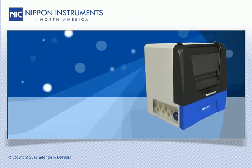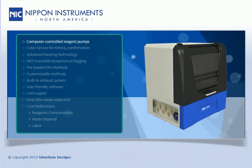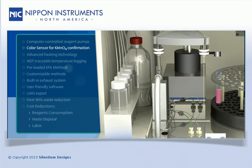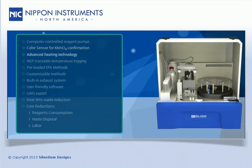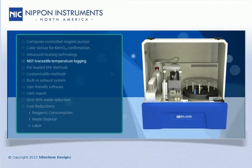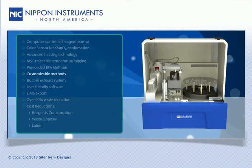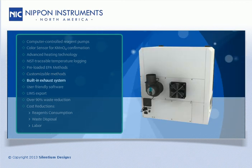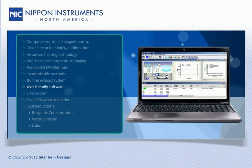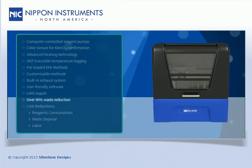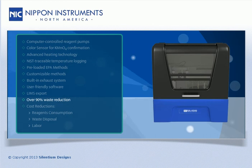The RA4500 features computer-controlled reagent injection pumps for accurate and precise reagent addition, a color sensor to ensure the presence of excess potassium permanganate, advanced heating technology, NIST traceable digestion temperature logging, pre-loaded and customizable methods that include sample digestion and analysis, a built-in exhaust system, user-friendly software with LIMS export function, and over 90% reduction in generated waste versus traditional techniques.